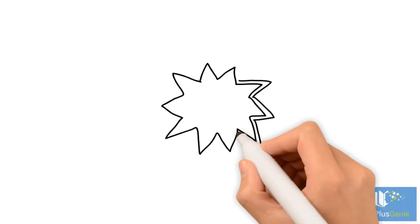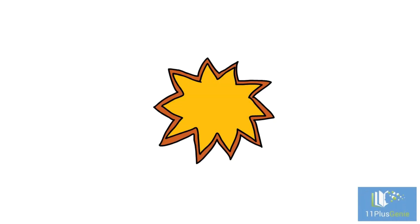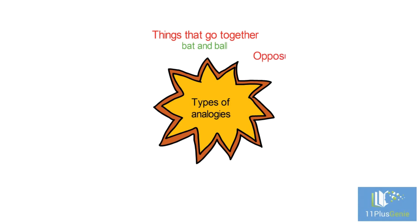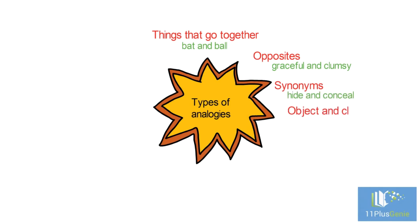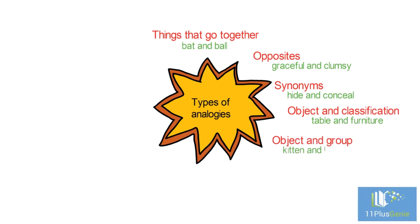Pairs of words can be related in many ways, including the following types of analogy: Things that go together, like bat and ball. Opposites, like graceful and clumsy. Synonyms, like hide and conceal. Object and classification, like table and furniture. Object and group, like kitten and litter.